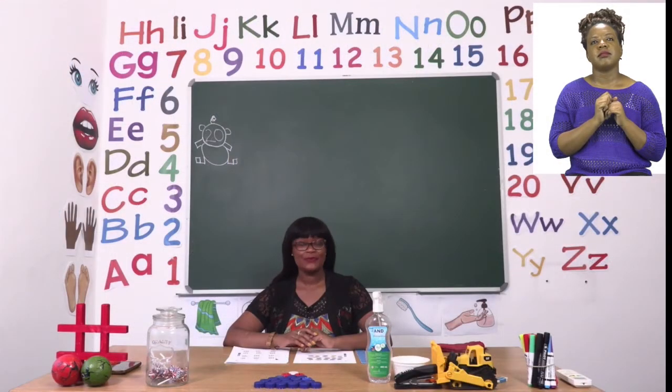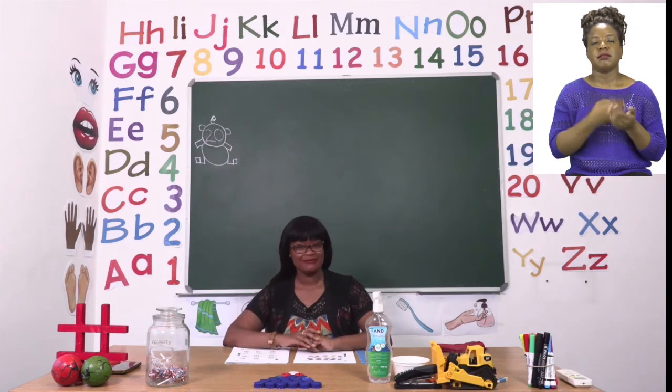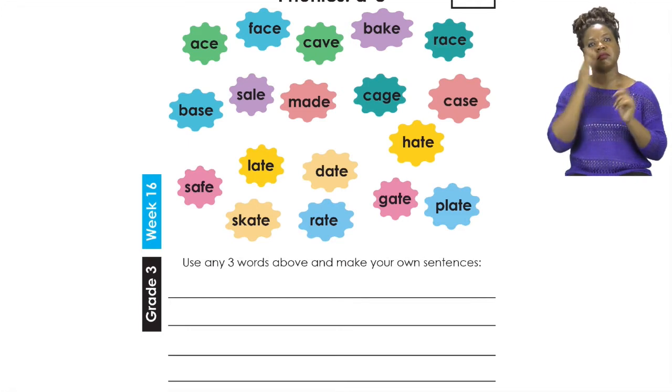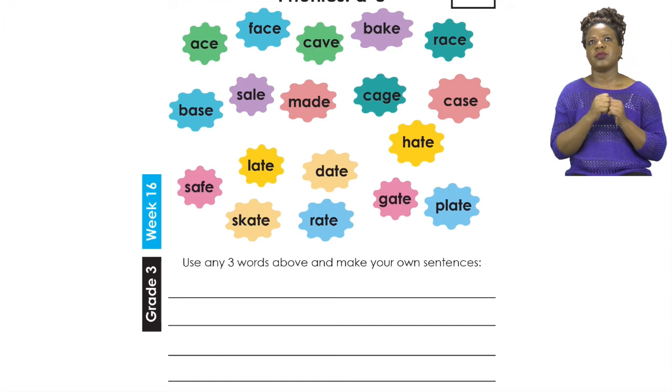For our exercise we are going to now turn to page 20. On page 20 we are going to be doing some phonics words. Now as you can see all the words there have one thing in common. They all have a and e. And when we pronounce the words they sound similar. We are going to read all of the words and then after that we are going to make three sentences using any of the words. Let's begin by reading the words. Please repeat after me.